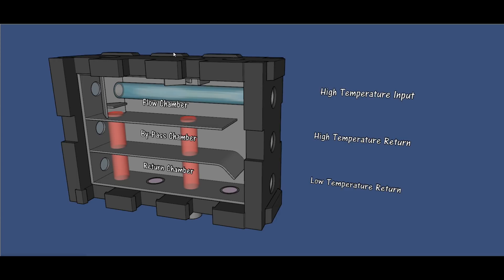The bypass chamber returns the water that hasn't been used by the zones back to a high temperature boiler. On the bottom we have a return chamber, and this captures the water coming back from any zones having lost energy.